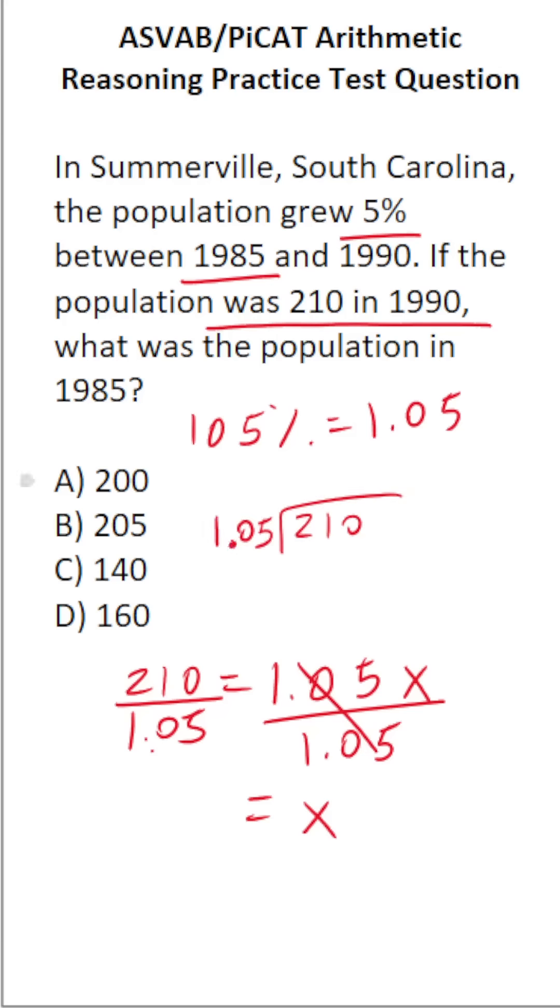Now, when you do long division, you can't have a decimal outside the division bracket, so we're going to shift this decimal one, two times to the right to make this 105.